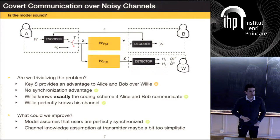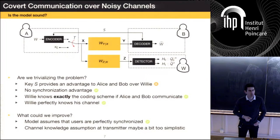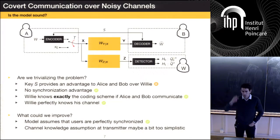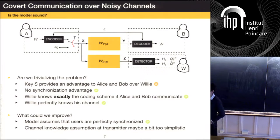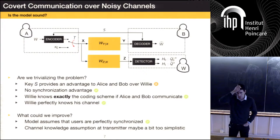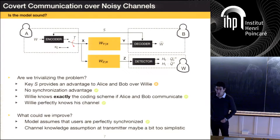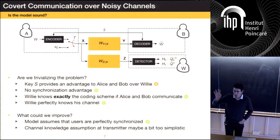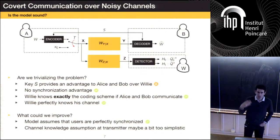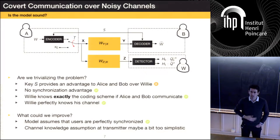Sid makes a valid point: there's an asymmetry between the channels being known perfectly. Lifting the assumptions about knowledge for legitimate parties versus the eavesdropper has very different consequences. Sid has done very fundamental work on this — essentially, if Willy doesn't really know its channel perfectly, the entire square root law goes away. They have a pretty nice characterization of what that means.